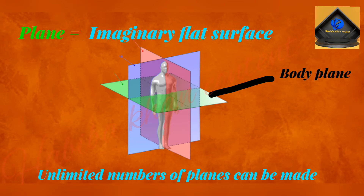A plane is an imaginary flat surface. Often times the body is sectioned or cut along a surface or plane, which is referred to as a body plane. An unlimited number of sections can be made along an unlimited number of planes. When a section of the body or an organ is cut, it is named after the plane in which it occurs.